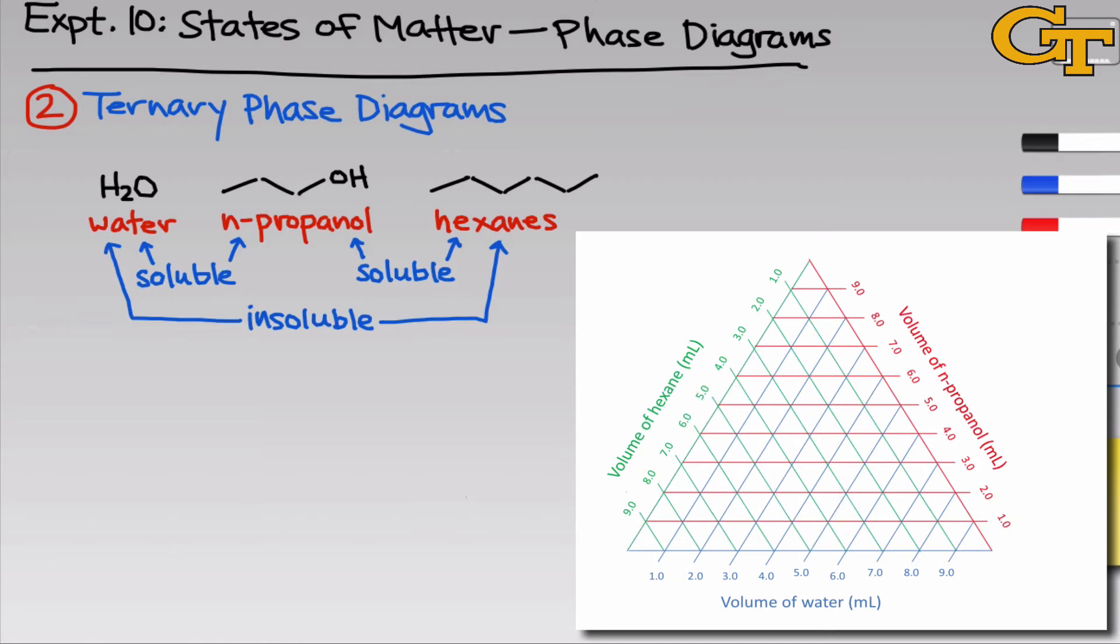Finally, the horizontal tie lines correspond to the volume of n-propanol in the mixture. Notice once again that these tie lines stick out from the right-hand side of the triangle and tell us the volume present in each mixture along that tie line. So for example, all of the mixtures along this red line I've highlighted contain six mLs of propanol.